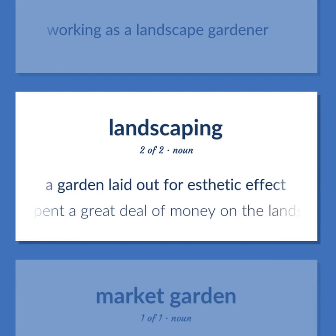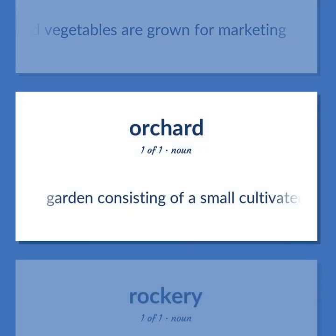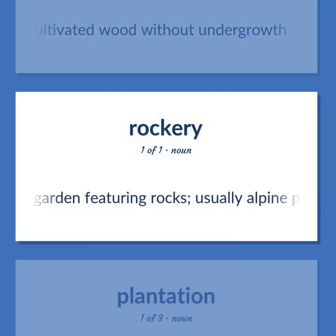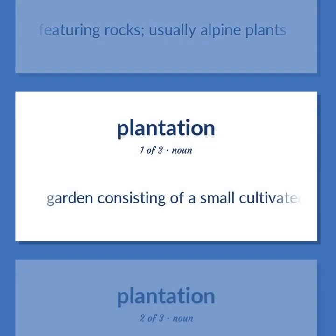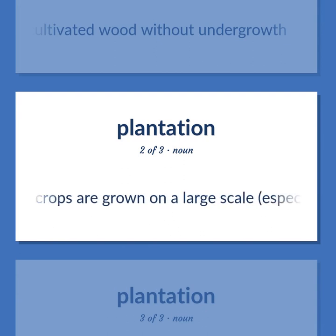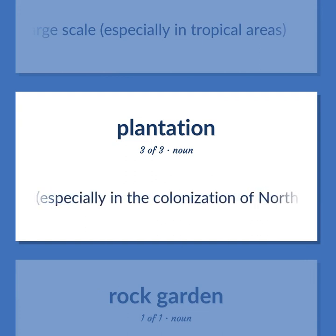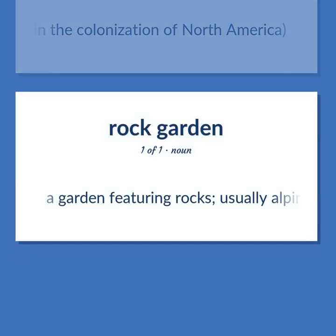A garden laid out for aesthetic effect — they spent a great deal of money on the landscaping. A garden where fruit and vegetables are grown for marketing. Garden consisting of a small cultivated wood without undergrowth. A garden featuring rocks, usually alpine plants. An estate where cash crops are grown on a large scale, especially in tropical areas. A newly established colony, especially in the colonization of North America. Become our student and get access to effective and free educational materials — subscribe to our YouTube channel to become part of our growing community and to learn English effectively.